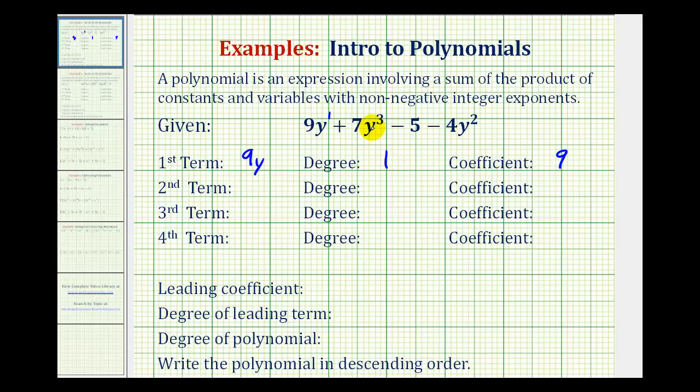The second term would be 7y cubed or 7y to the third. The degree, again, is the exponent on the variable factor. So this is a degree three. And the coefficient is the constant factor. In this case, seven.